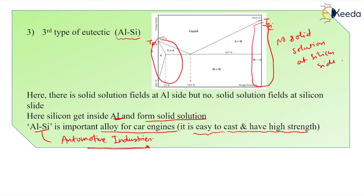For making the casting of this aluminum and silicon alloy for the car engines. This is the third type eutectic system.